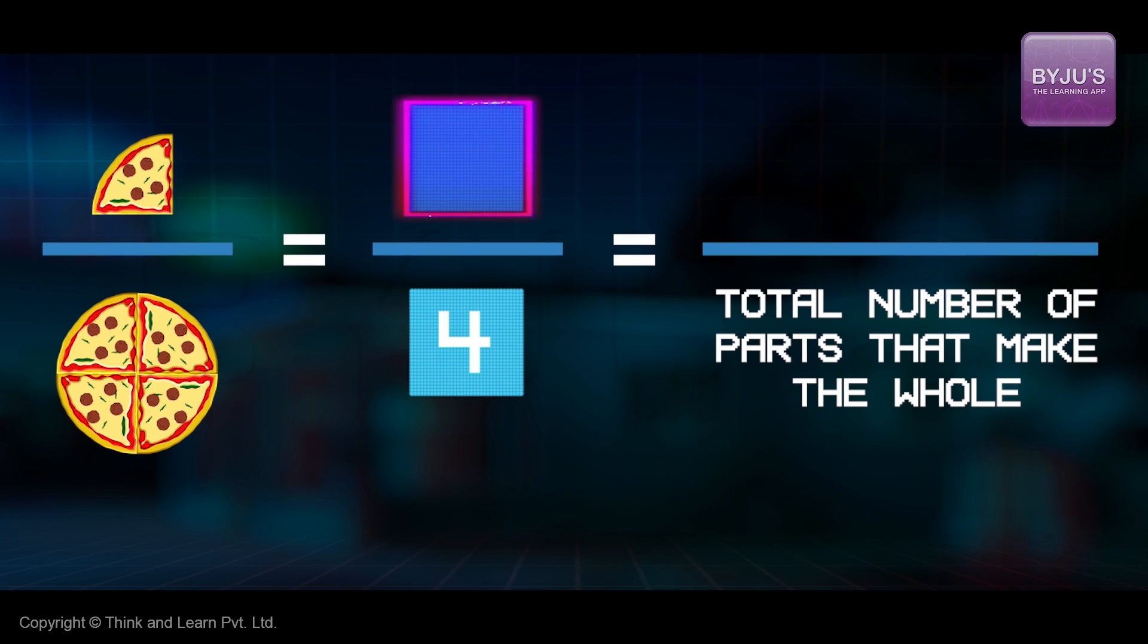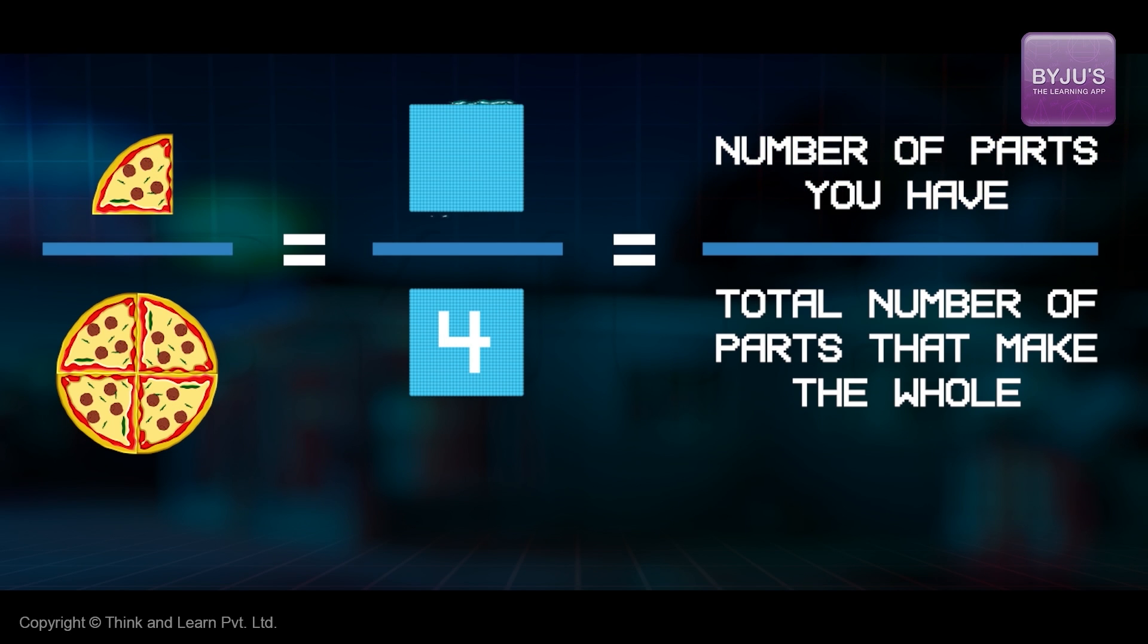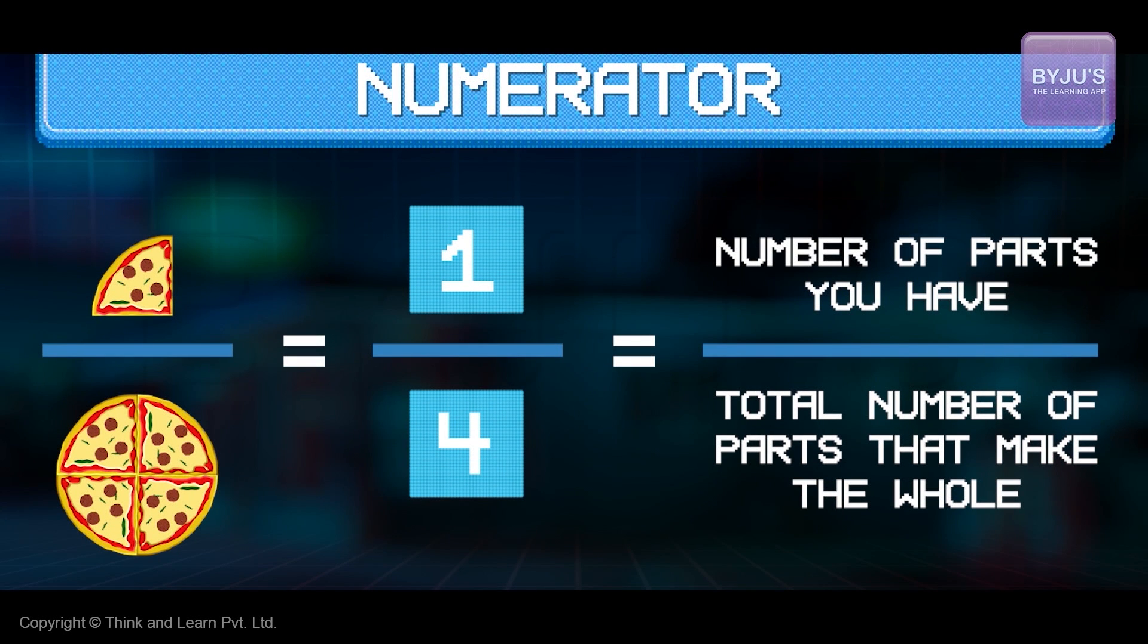And the number on top tells us how many parts of the whole you have. Here, you had one out of the four parts. And just like the bottom number had a special name, the top number also has a special name. It's called numerator. So, in this fraction, the numerator is one.